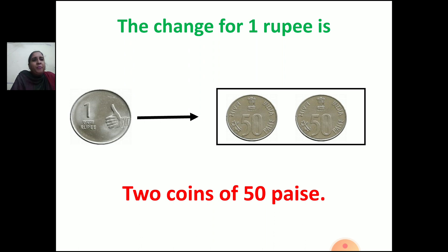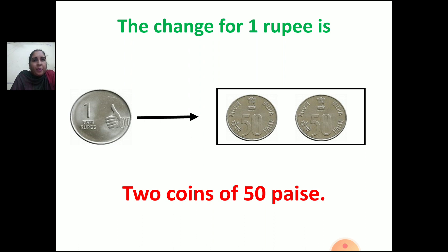Now let us start with the chapter. Here is the change for 1 rupee. If I tell you, give me change for 1 rupee — how many 50 paise coins are there? Two 50 paise coins. Though we are not using 50 paise much now, and 25 paise is not in circulation at all. So if you want change for 1 rupee coin, you will get 2 coins of 50 paise. Two 50 paise coins will make 1 rupee.